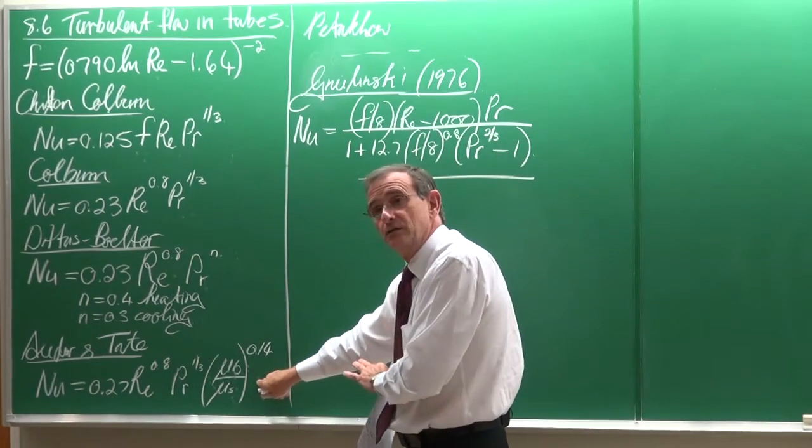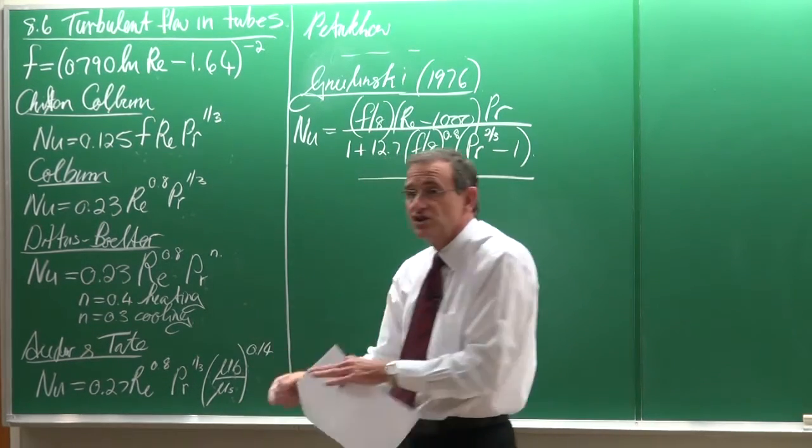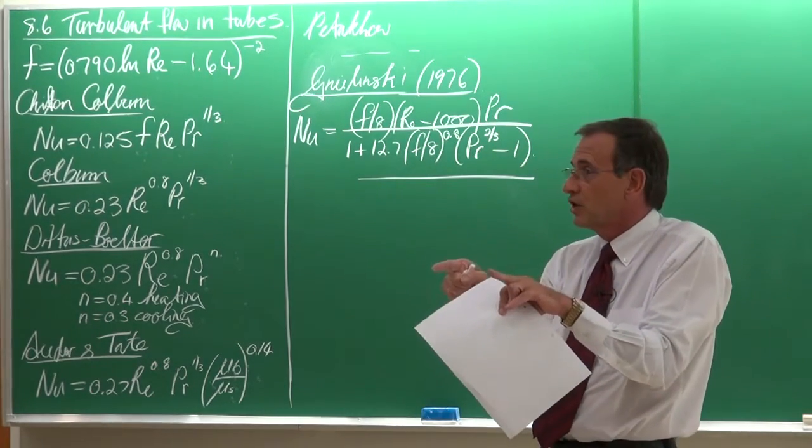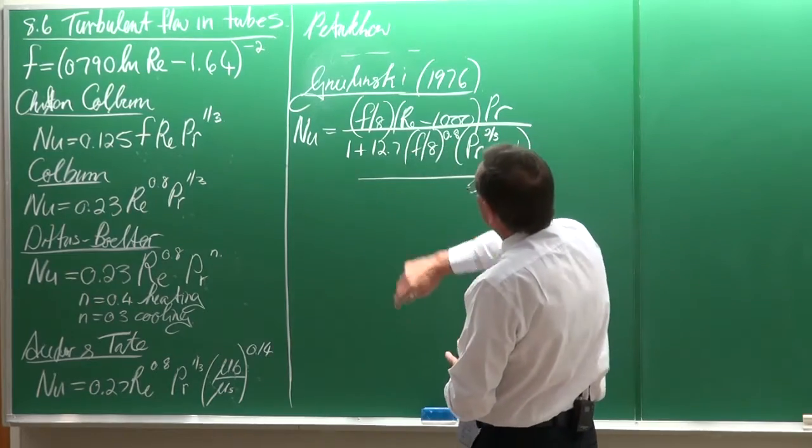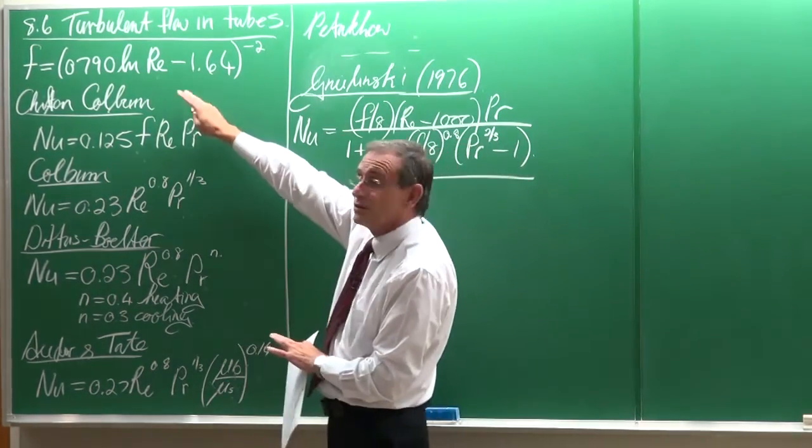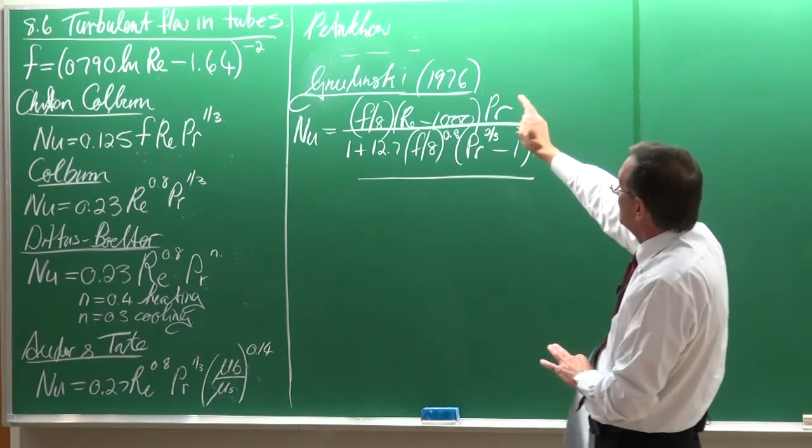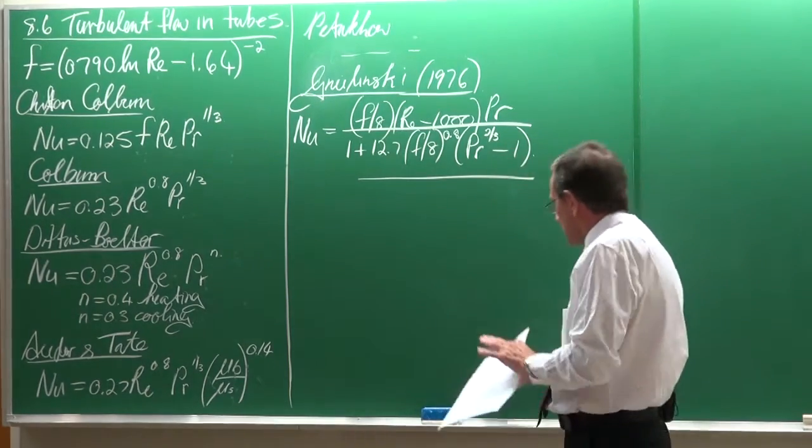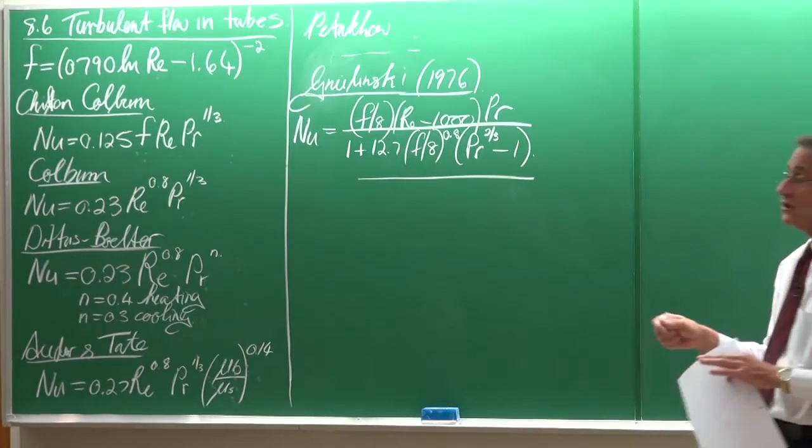Again, and I didn't put it in because of the space limitations, is that all these equations are valid in a certain Reynolds number range and in a certain Prandtl number range. And they are given there. So please take note of them. Then, the Pettikoff equation was also based on the same data set and then lastly in the Glinski equation, which was developed in 1976. There are a few revisions on it, but this is considered as the most accurate equation so far. So these are the equations that are available.